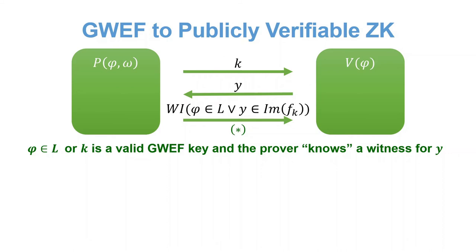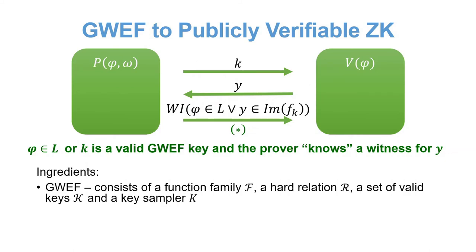Formally stating our ingredients, we have a general WEF, consisting of a function family, a hard relation, a set of valid keys, and a key sampler. And a three-message, offline online, witness indistinguishable argument of knowledge. By offline online, we mean that there is a setup stage in the first two messages, which is independent of the statement being proved in the last message. Note that those can be constructed from non-interactive commitments.